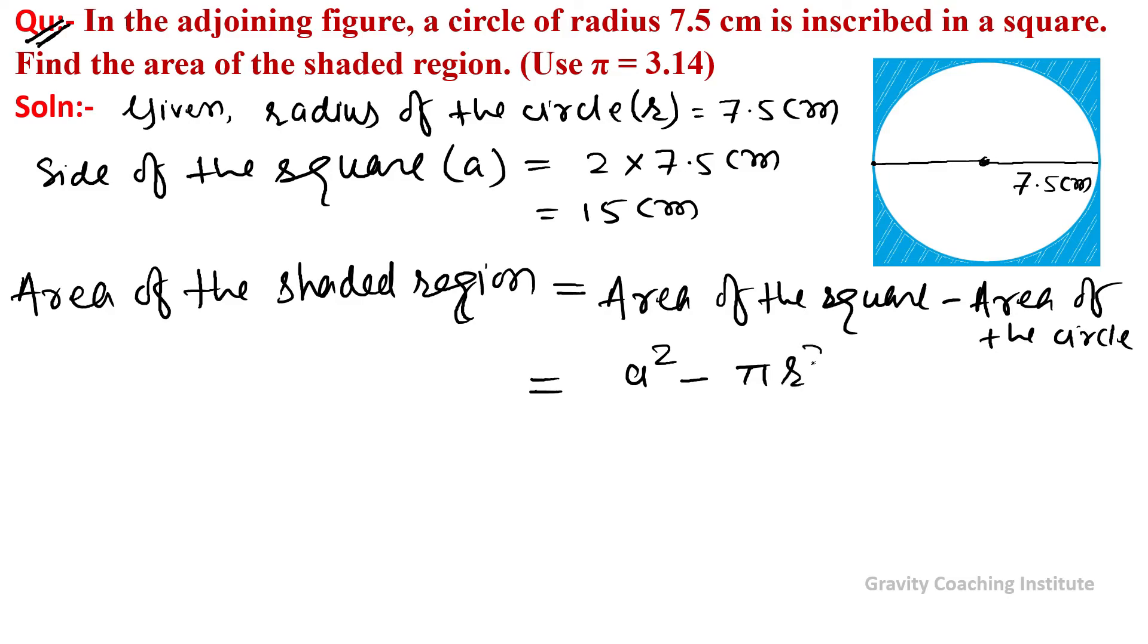So equals 15 squared minus 3.14 times radius 7.5 times 7.5, which equals 225 minus 3.14 times 56.25. This equals 225 minus 176.625, so equals 48.375 cm squared. Answer.